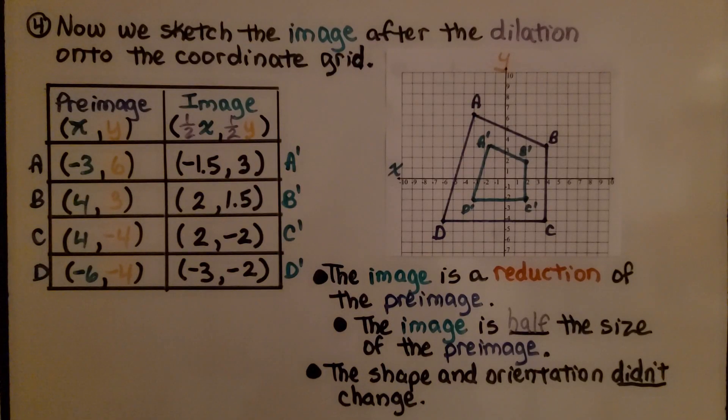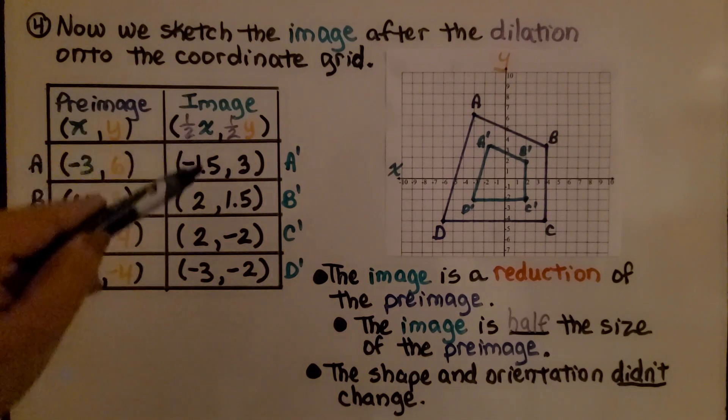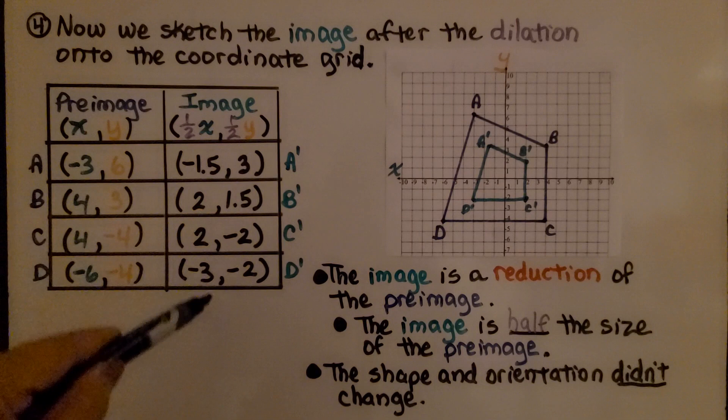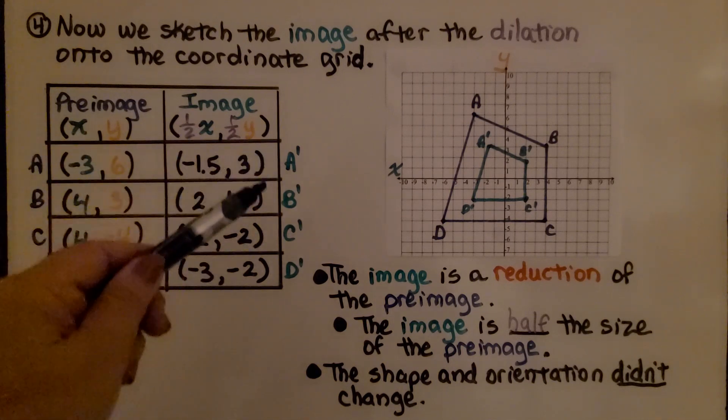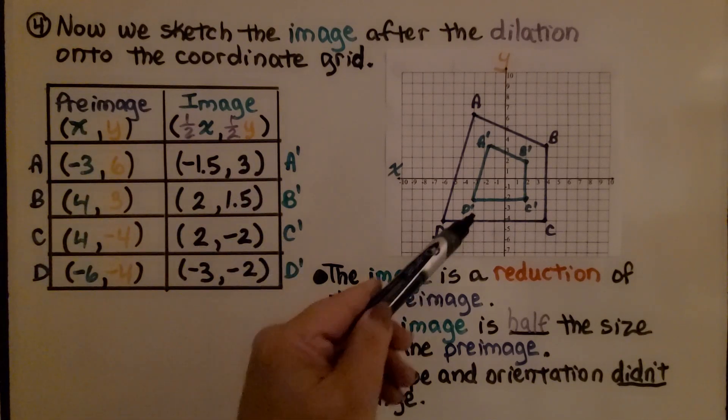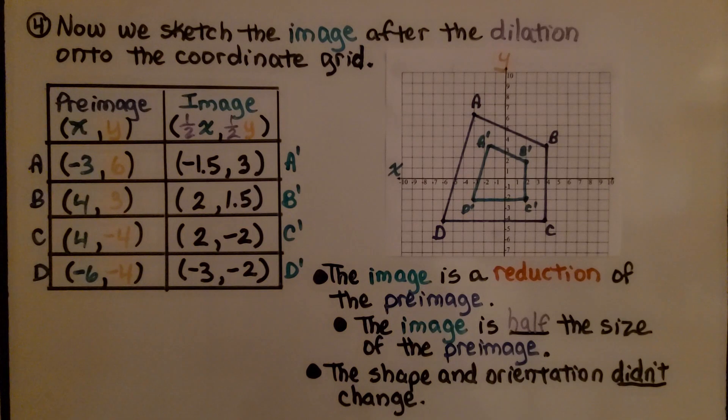Now we sketch the image after the dilation onto the coordinate grid. We have all of the vertex coordinates for A prime, B prime, C prime, D prime. We draw it onto the coordinate grid. The image is a reduction of the preimage.